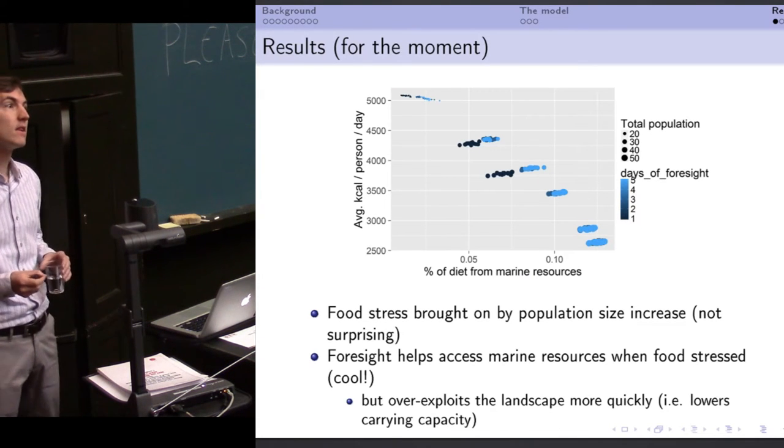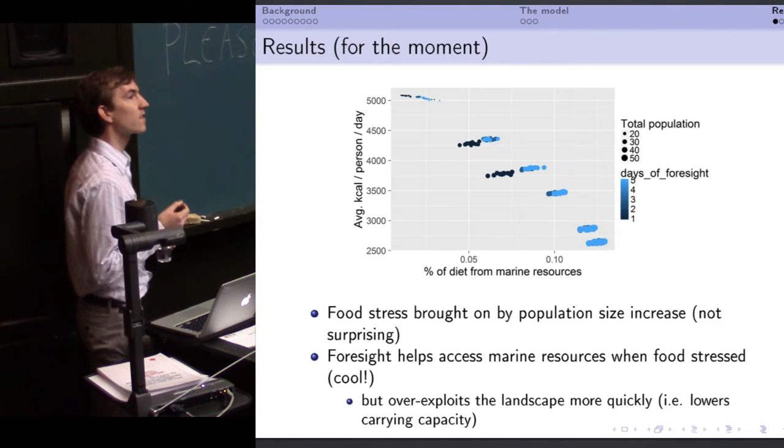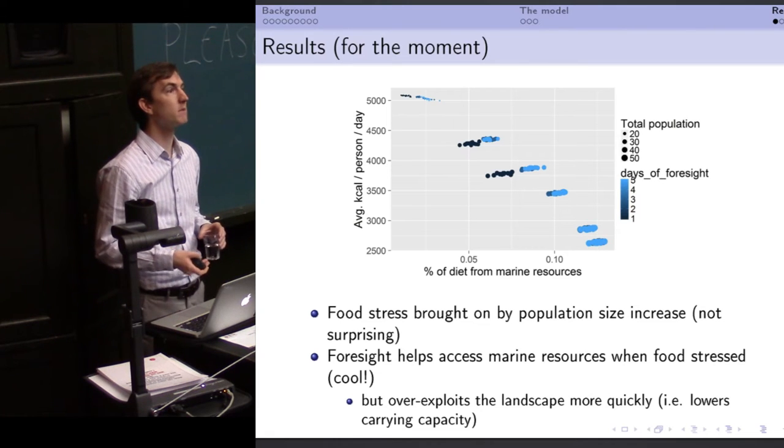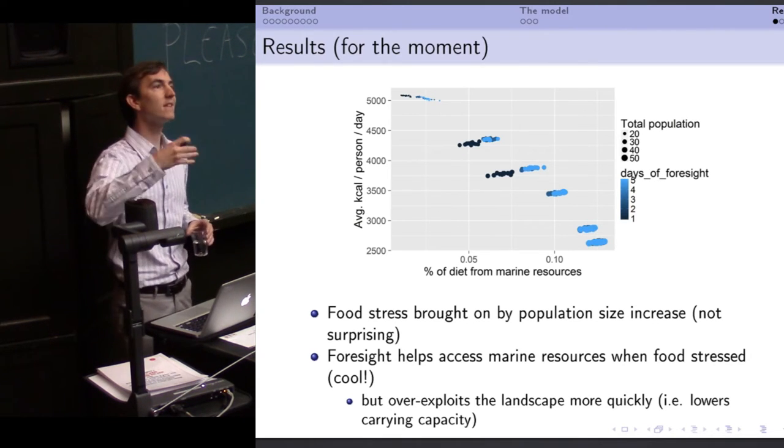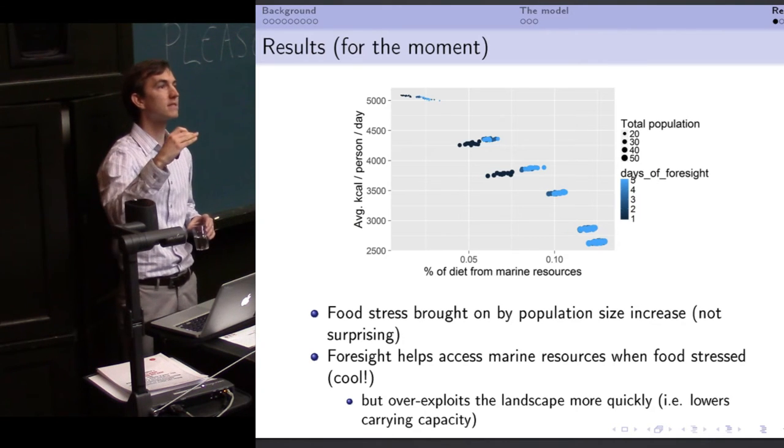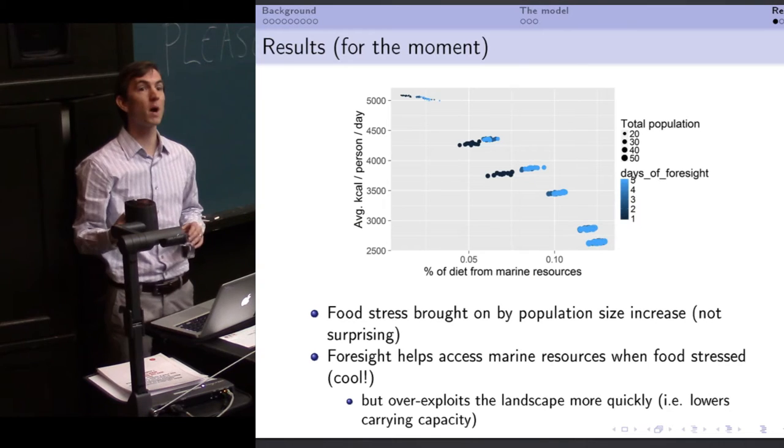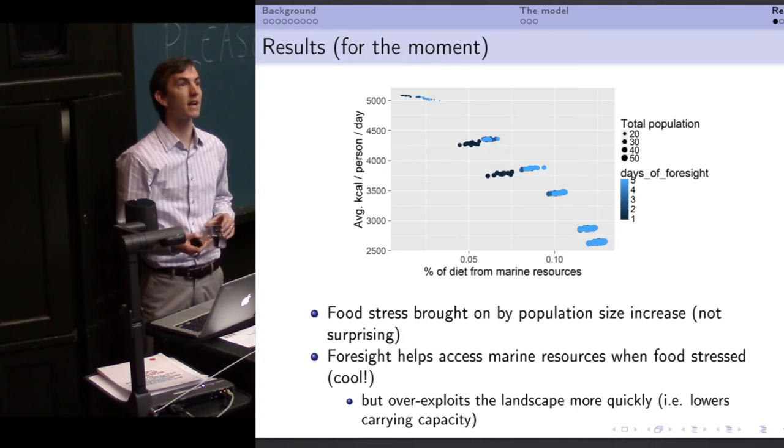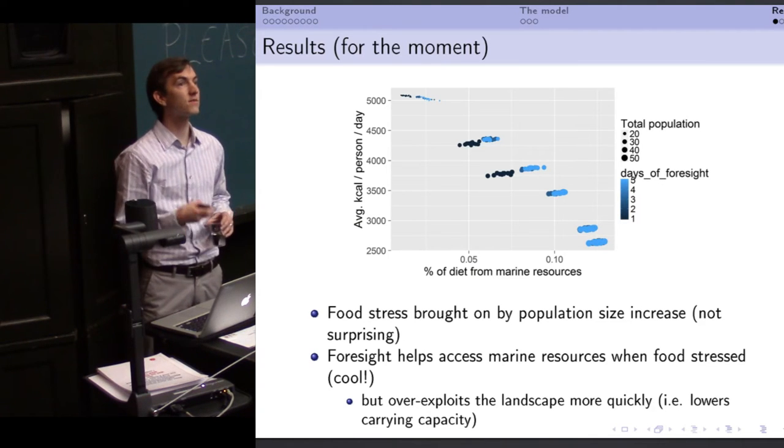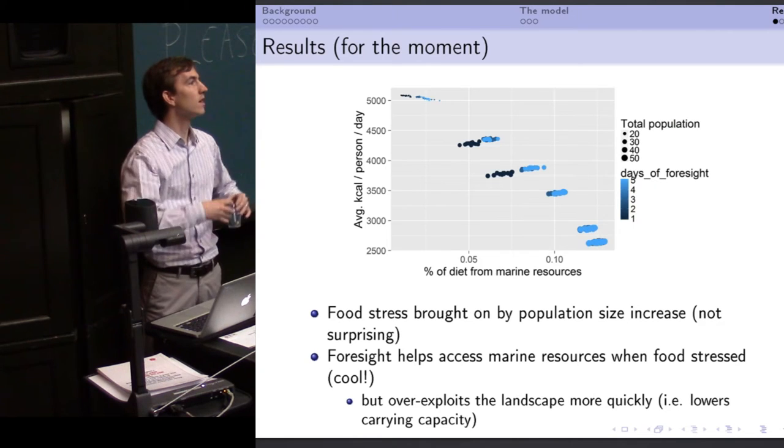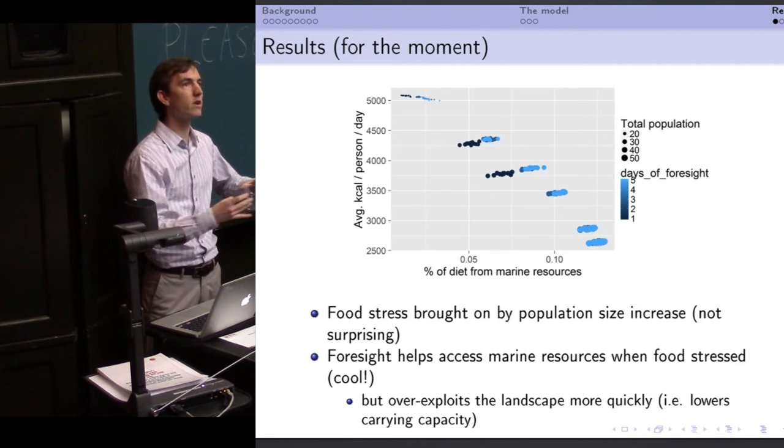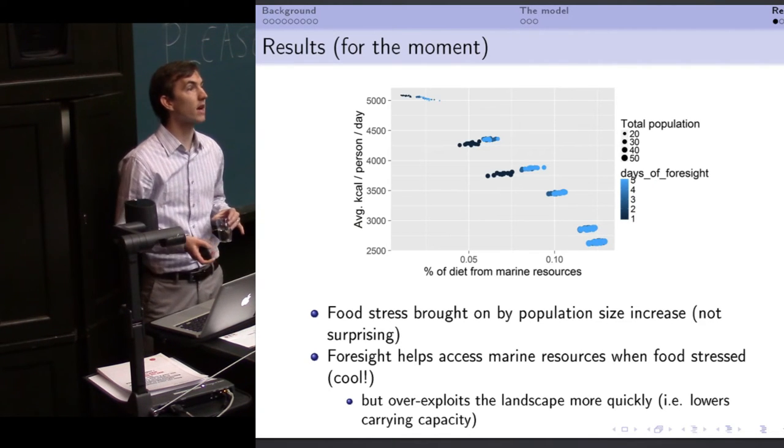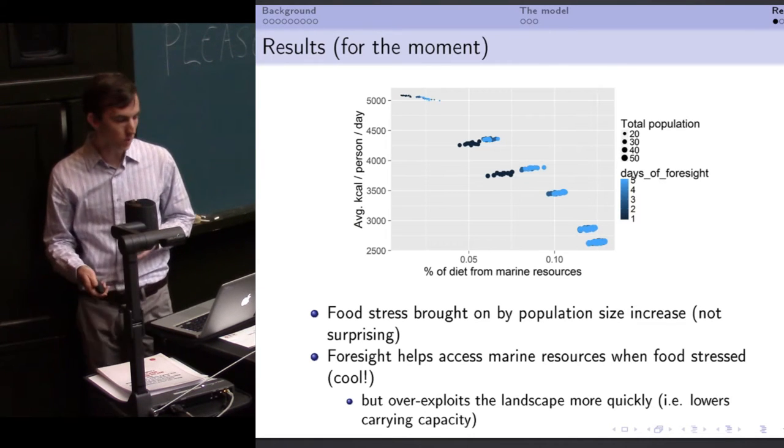What we didn't necessarily expect was that because the agents are smarter and can better exploit the environment, they overexploit the environment more quickly. So, a more intelligent agent actually lowers the carrying capacity of the landscape as a whole. You can have a larger population size for a stupid agent than you can for a smart agent, which is interesting. That has very large implications for what we assume in terms of population sizes, group orientation, how many people you can fit in there and the nature of, and probability of interaction with other groups. All of this is very cool and unexpected.